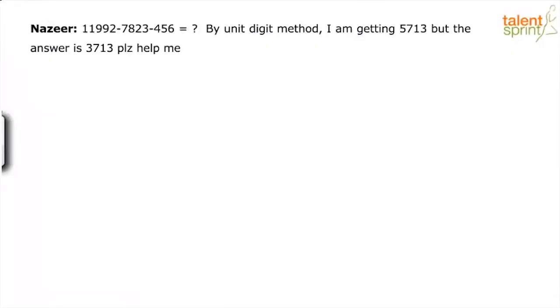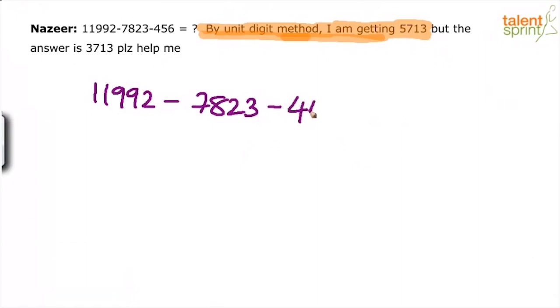11,992 minus 7,823 minus 456 equals what? By unit digit method I'm getting 5713, but the answer is 3713, please help me. Well Nazeer, first you need to understand that when you use unit digit method, you must tell us the options, because it can only be used when options are given. By unit digit method, 2 minus 3 is minus 1, minus 1 minus 6 is minus 7. So 10 minus 3 gives unit digit 3. Unit digit method only tells us the answer ends with 3. How did you decide it's 5713?